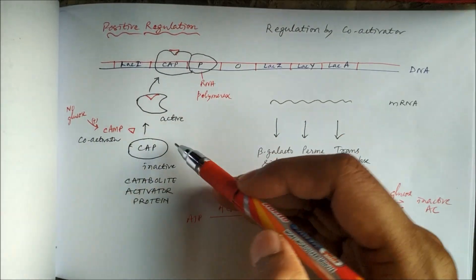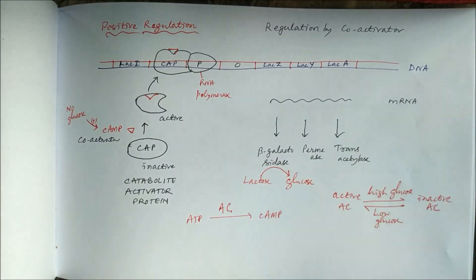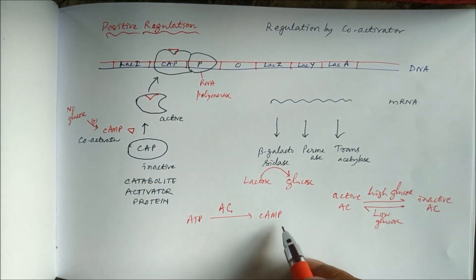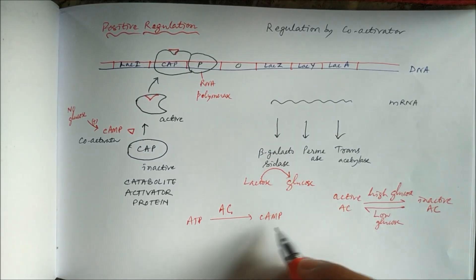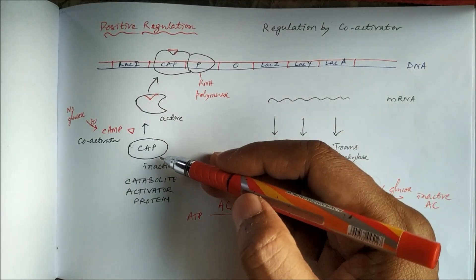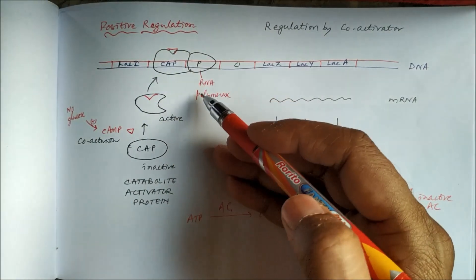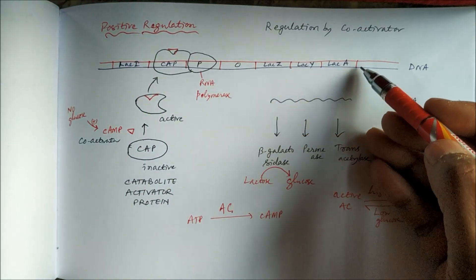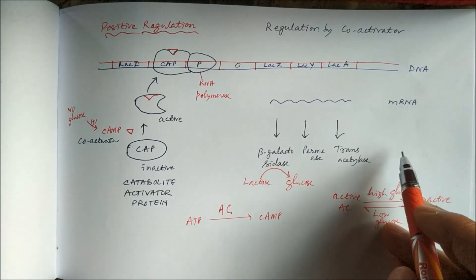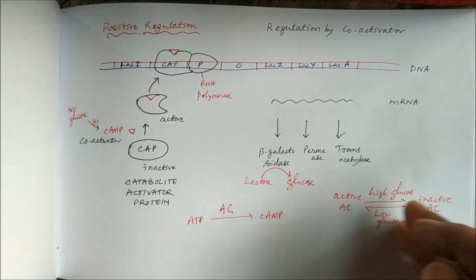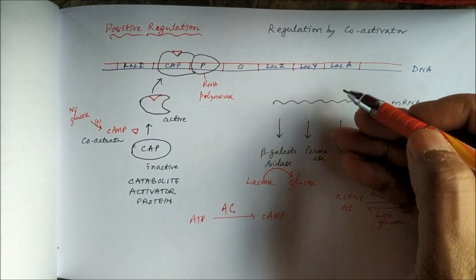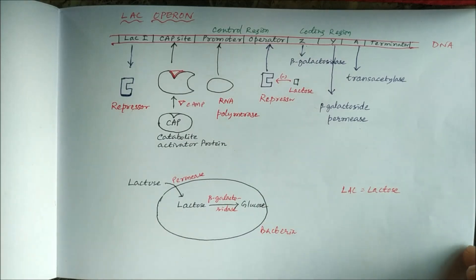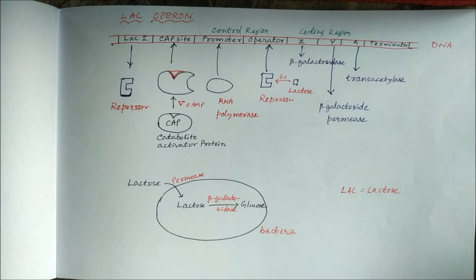In positive regulation, when there is low or no glucose, the adenylate cyclase enzyme becomes active and produces cyclic AMP. Cyclic AMP activates the inactive CAP (catabolite activator protein), which facilitates binding of RNA polymerase to the promoter site, resulting in gene expression, production of corresponding messenger RNA and proteins, and degradation of lactose to glucose. Thus in prokaryotes, operons regulate gene expression — that is all about gene expression and regulation.